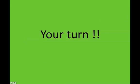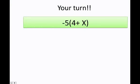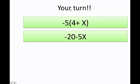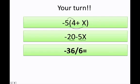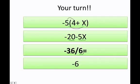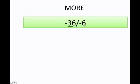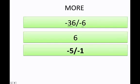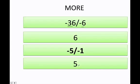Now let's go ahead and do it — it's going to be your turn. Tell me how much is negative 5 times the quantity (4 plus x)? We get: negative 5 times 4 equals negative 20, and negative 5 times x equals negative 5x. What about negative 36 over 6? I hope you say negative 6. And negative 36 divided by negative 6 is actually 6. Negative 5 divided by negative 1 is actually 5.